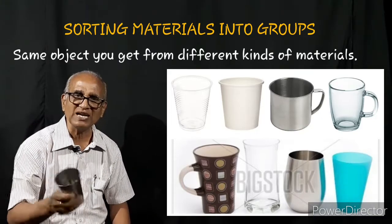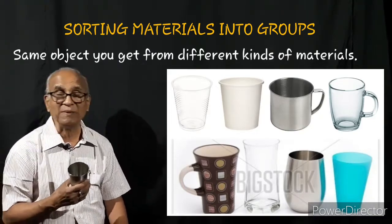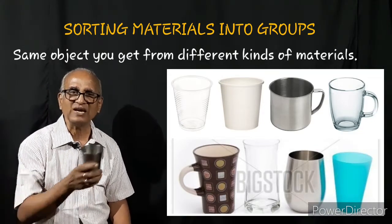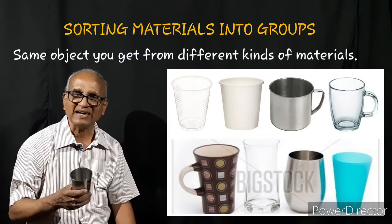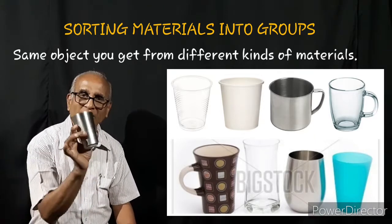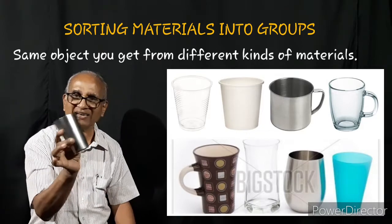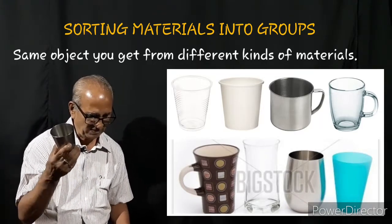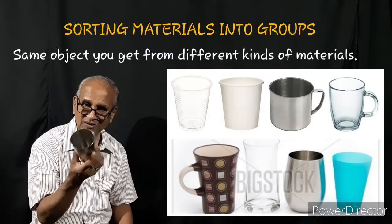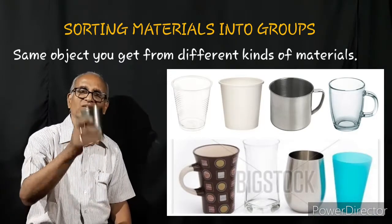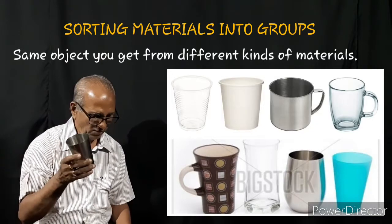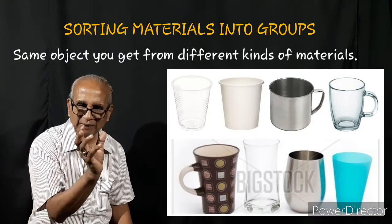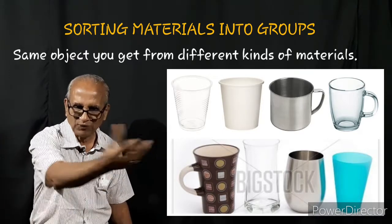When you go to the bazaar, you get confused — what shall I buy? Then you decide based on what you need it for. You decide what material the cup should be made of. One item you get from different materials. Most of these types of cups you have in your houses — even thermocool cups come. You use the thermocool cup and throw it; plastic cups we use and throw. You have glass cups, ceramic cups, aluminium cups — same item from different kinds of materials.